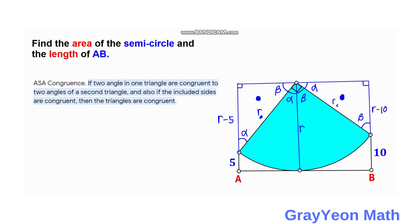By ASA congruence these two triangles are congruent to each other. For the left triangle, the side opposite beta is R minus 5, so for the right triangle the side opposite beta is also R minus 5. Since the left and right triangles are congruent, the side opposite alpha in the right triangle must equal the side opposite alpha in the left triangle, which is R minus 10.